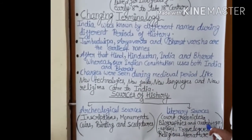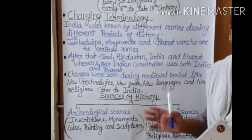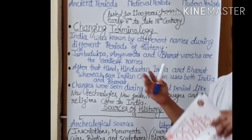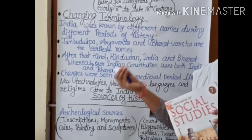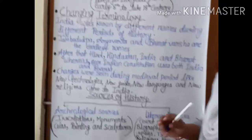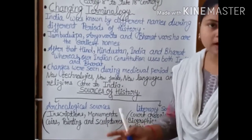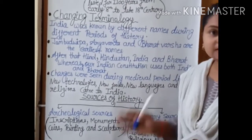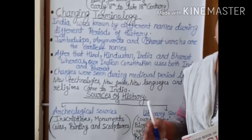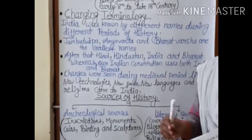The next literary source is biographies and autobiographies. In both we discuss the life of a king or ruler, but the difference is that a biography is written by someone else — for example, a biography of a ruler written by a poet or writer. An autobiography is written by the person himself, like Babur wrote his autobiography, the Baburnama, himself. Travelogues were written by persons who came to India from outside and wrote down the history of that time.